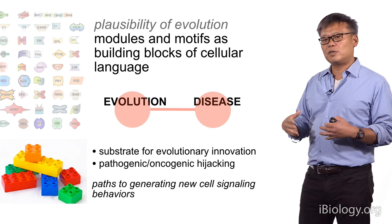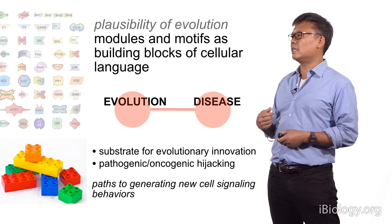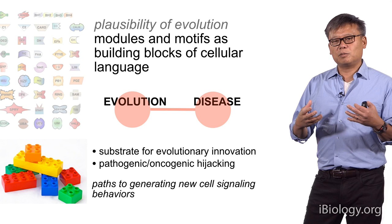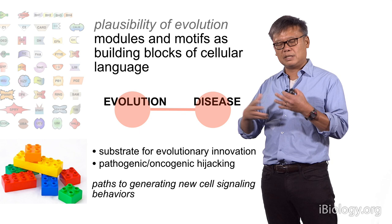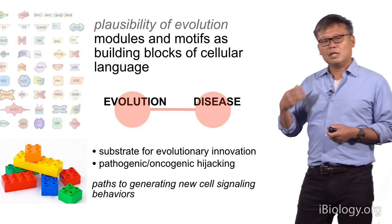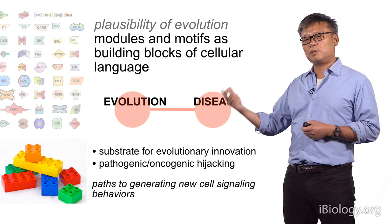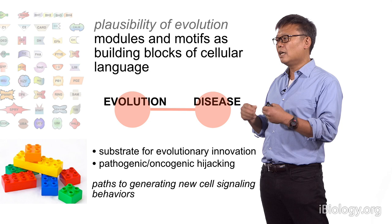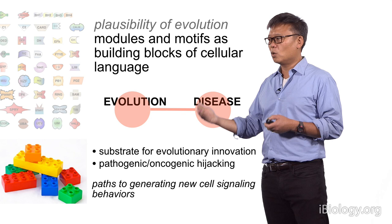We see these sorts of mechanisms over and over again in many different signaling proteins with different types of catalytic interaction domains. It really lends itself to the plausibility that these modules and motifs truly form a toolkit — a set of building blocks or a cellular language that we can use to create new functions, and that evolution has used this. We see this by the different combinations of domains in evolved proteins, and also from disease: in diseases like cancer or viral pathogenic diseases, there's evidence that these sorts of modules have been hijacked to redirect catalytic functions to new targets, generating new signaling behaviors associated with pathology.